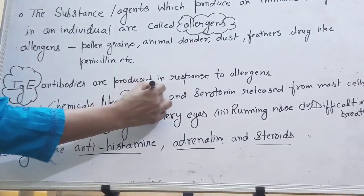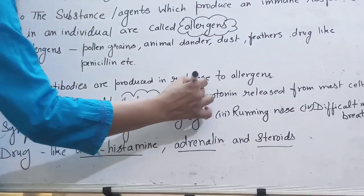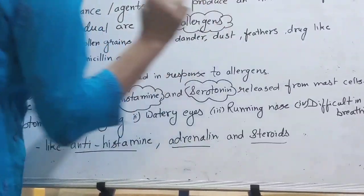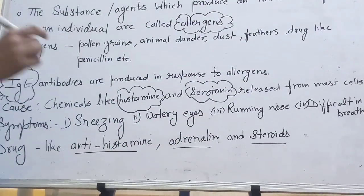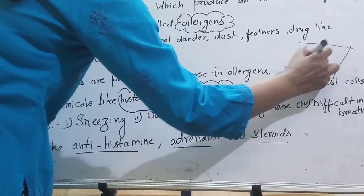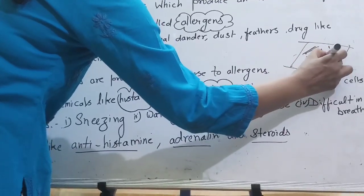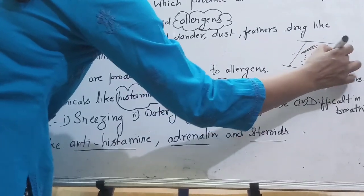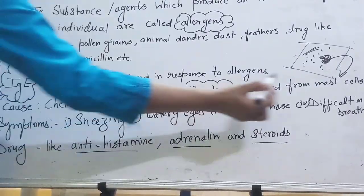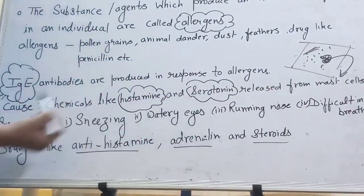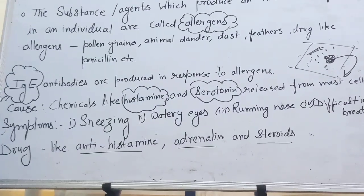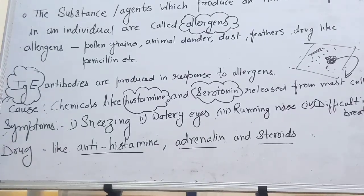Chemicals like histamine and serotonin are released from mast cells. You know the mast cell? In chapter number 7, animal tissue, you will see there are fibers, a matrix, and some mast cells. So this mast cell produces these types of chemicals, and we show some rashes over the body and other symptoms.